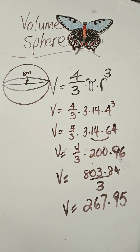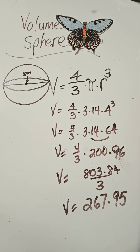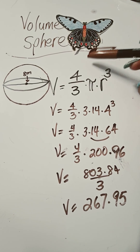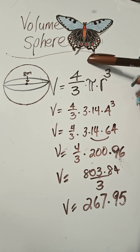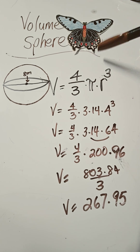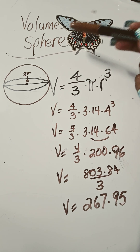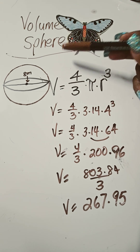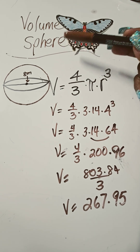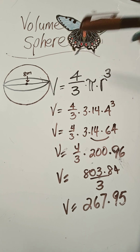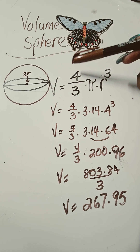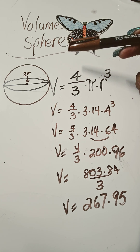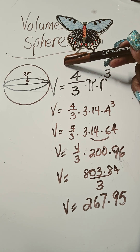Welcome. I am back with another one. So today we're looking at the volume of a sphere. We did the volume of a cylinder. We did a cone, which was one third the formula of the volume of the cylinder.